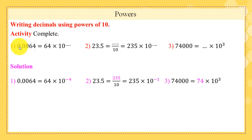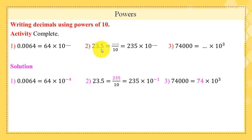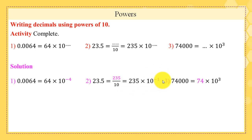Solution. In part 1, 0.0064 has 4 decimal numbers after the decimal point, so 0.0064 equals 64 times 10 to the power minus 4. Similarly, 23.5 has one number after the decimal point, so 23.5 equals 235 over 10, which is 235 times 10 to the power minus 1. Finally, 74,000 equals 74 times 1,000, which equals 74 times 10 to the power 3.